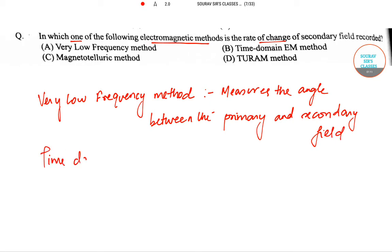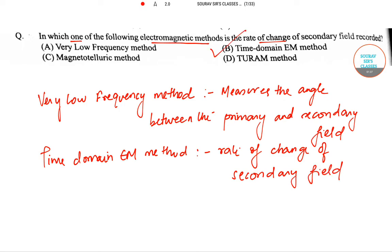Next comes the time domain EM method. So it actually measures the rate of change of secondary field, which is what is asked in the question. So that means B is the correct answer to this particular question.